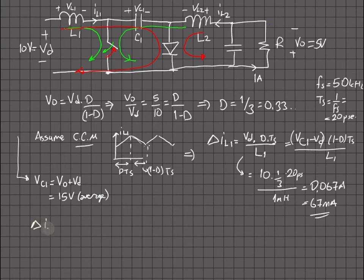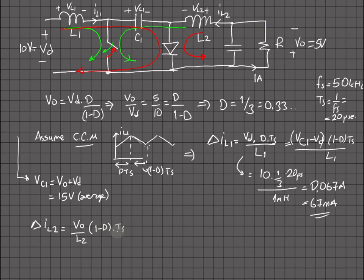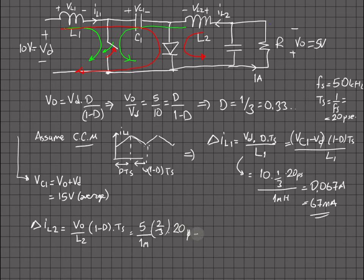Now let's calculate the ripple for the second inductor. During the off period, L2 sees the output voltage. So the ripple is V_out times (1 minus d)·Ts divided by L2: 5 divided by 1 millihenry times (2/3) times 20 microseconds, which gives 0.067 amps — also 67 milliamps.